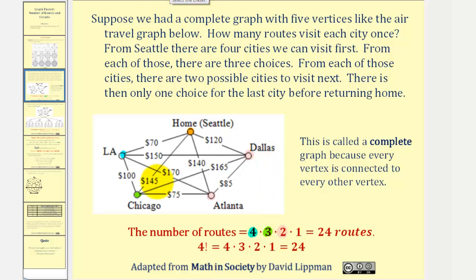After we make our third choice, let's just say Atlanta as an example, notice how there's one remaining choice, in this case Dallas, which gives us this last factor of one.